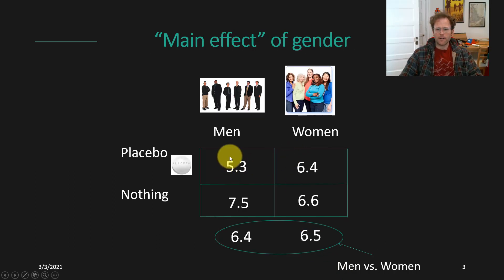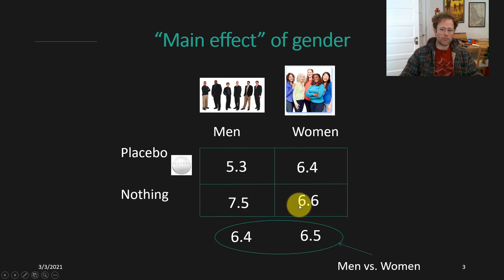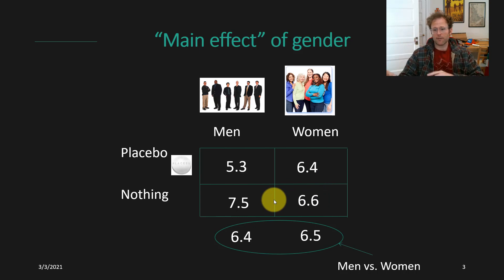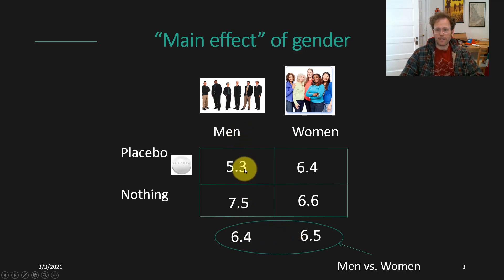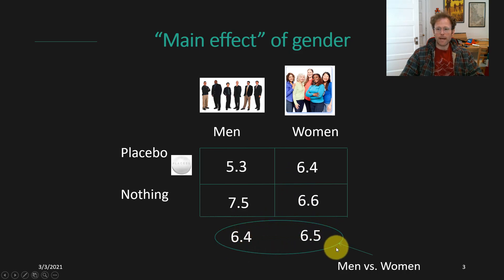If we have a mean for men who took the placebo of 5.3, and a mean for women who took the placebo of 6.4, a mean pain for men who took nothing of 7.5, and a mean pain for women who took nothing of 6.5, we can then aggregate across one variable to get the main effect of the other variable. The main effect of one variable means on average across the other variable. So to calculate that, I would take 5.3 and 7.5 and average those together to get 6.4.